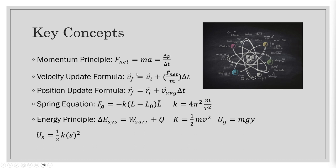Next, we need the velocity update formula, which is v final equals v initial plus f net over mass times delta t. We also need the position update formula, which is final position equals initial position plus our average velocity times our delta t.